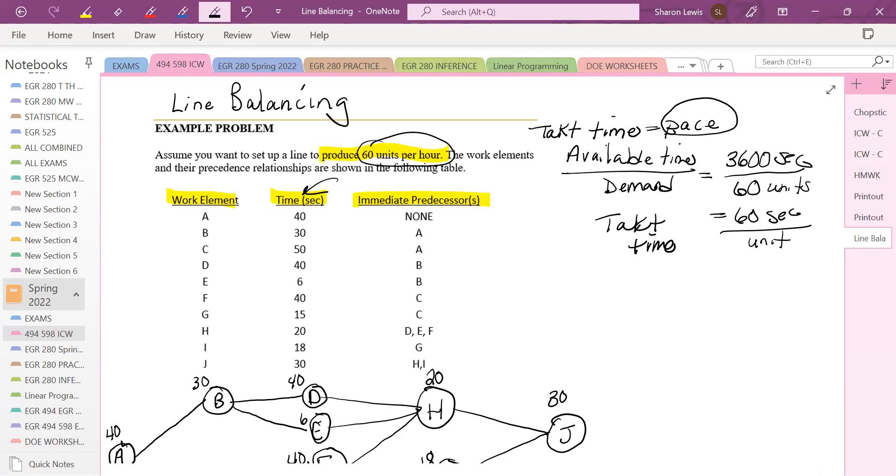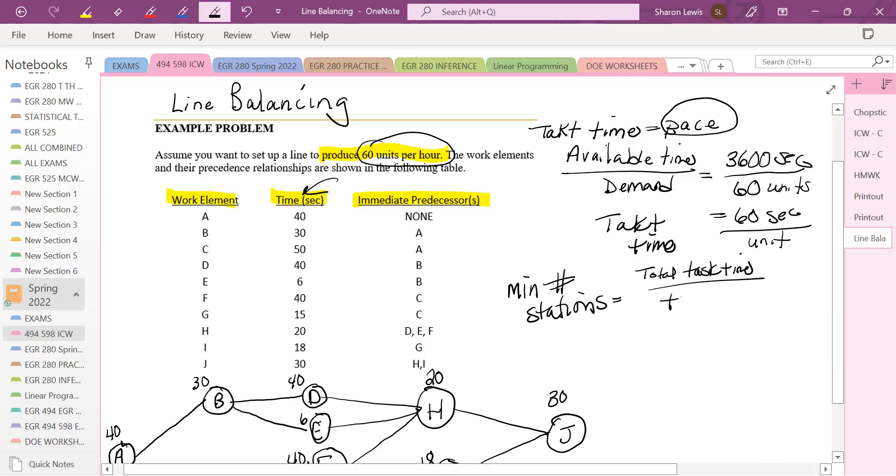So tact time then is 60 seconds or one minute, we're putting out a unit. So every 60 seconds, a unit, then we can meet demand. Now, what else we're going to calculate is the theoretical minimum number of workstations, because we want to allocate this work into stations that are going to move at the pace of tact time.